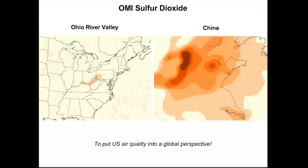To put US air quality in perspective: here I'm showing the Ohio River Valley on the same scale as China. The hottest spot in China is associated with a large cluster of power plants, so sulfur dioxide emissions in China are much higher than in the US. However, in the last few years China has begun to implement emission controls as well, and their pollutant levels have been decreasing over the last five years.